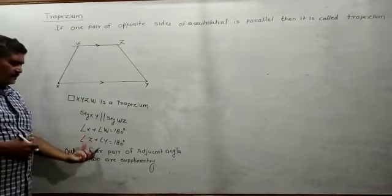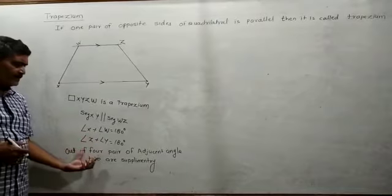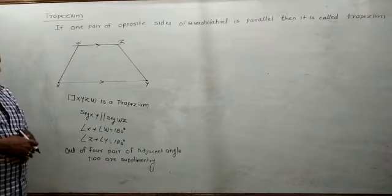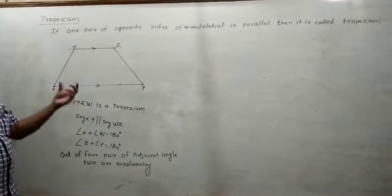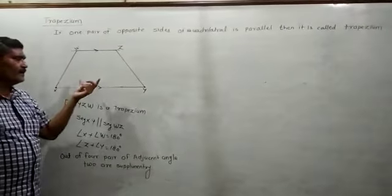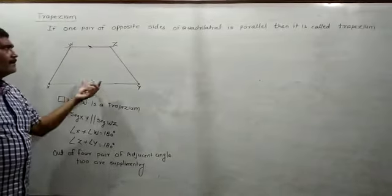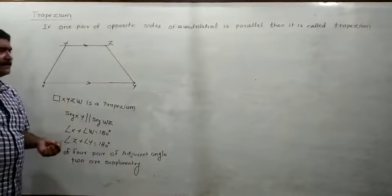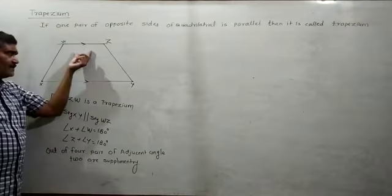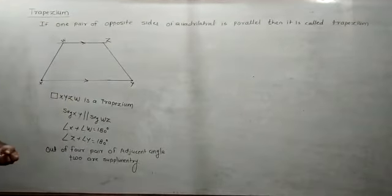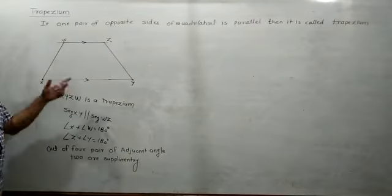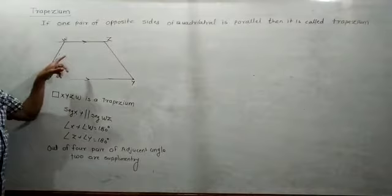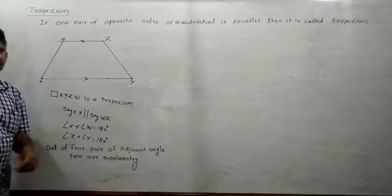These are the properties related to the trapezium. A trapezium is a quadrilateral where one pair of opposite sides are parallel, and then the quadrilateral is called a trapezium. Out of the four pairs of adjacent angles, two pairs are supplementary: angle W plus angle X equals 180 degrees, and angle Z plus angle Y equals 180 degrees.